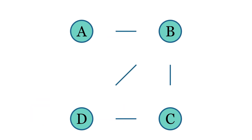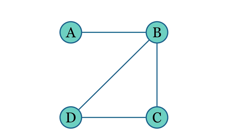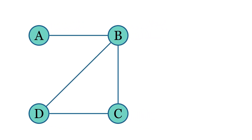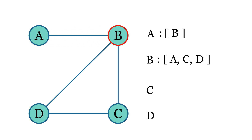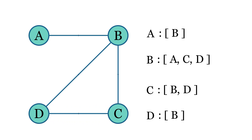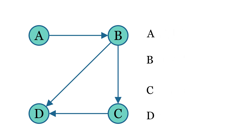Another way to represent a graph is by using an adjacency list. In an adjacency list, each node is associated with a list that contains all the nodes it's directly connected to. For example, node A here is only connected to node B, so we only store B in the adjacency list of A. This way, we only store the nodes that A is directly connected to, making the representation more efficient. The adjacency list for the other nodes will be created with each node only storing its direct connections. In the case of a directed graph, each adjacency list will only store the edges going out from the node.